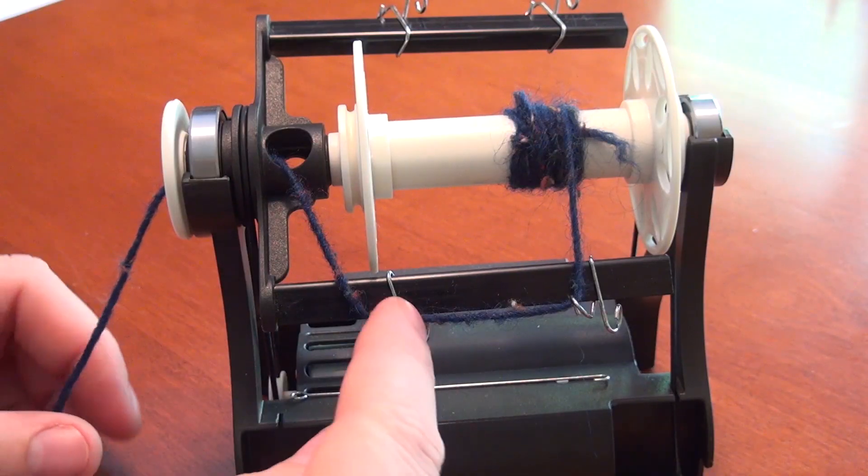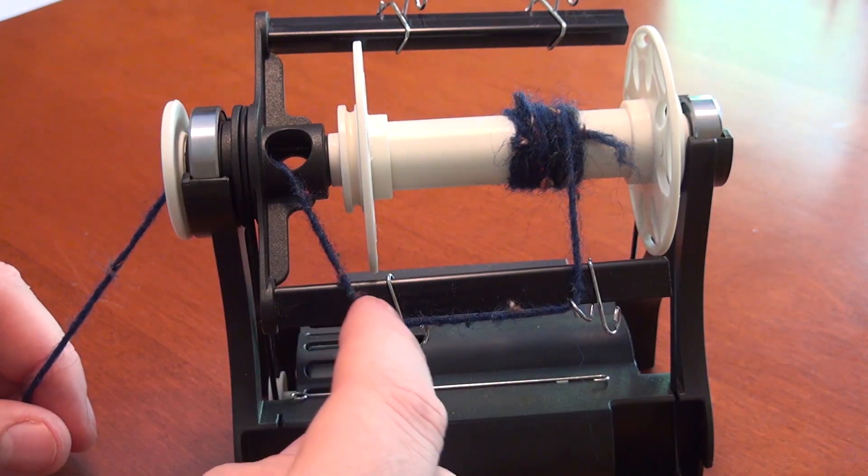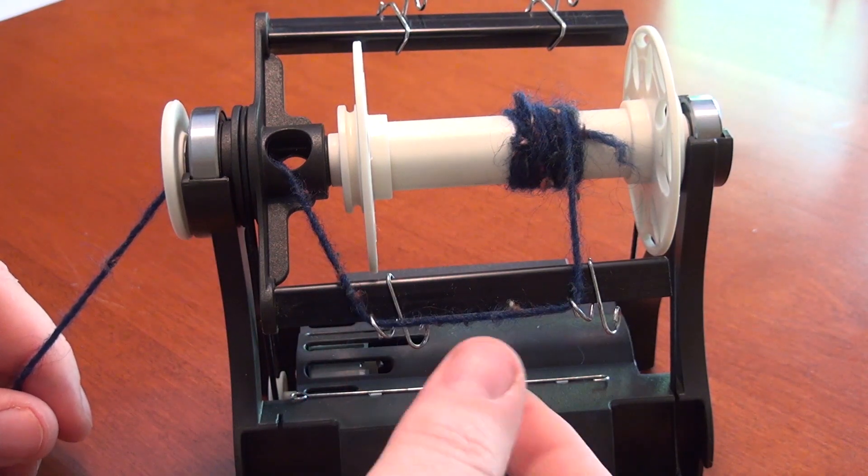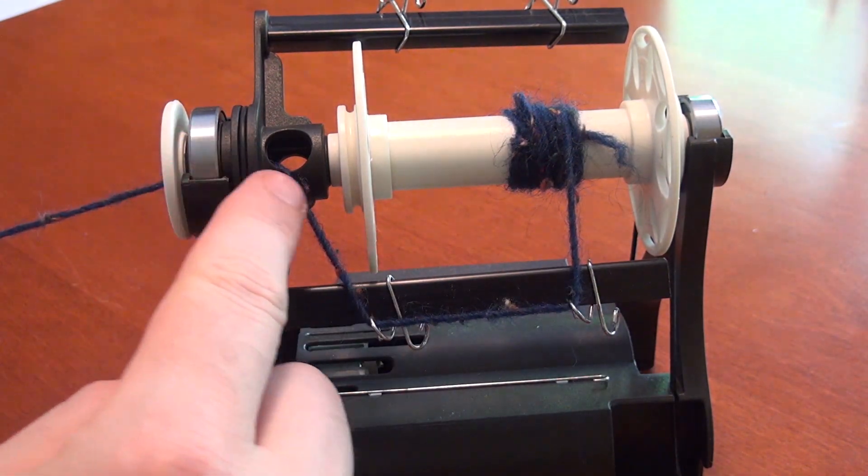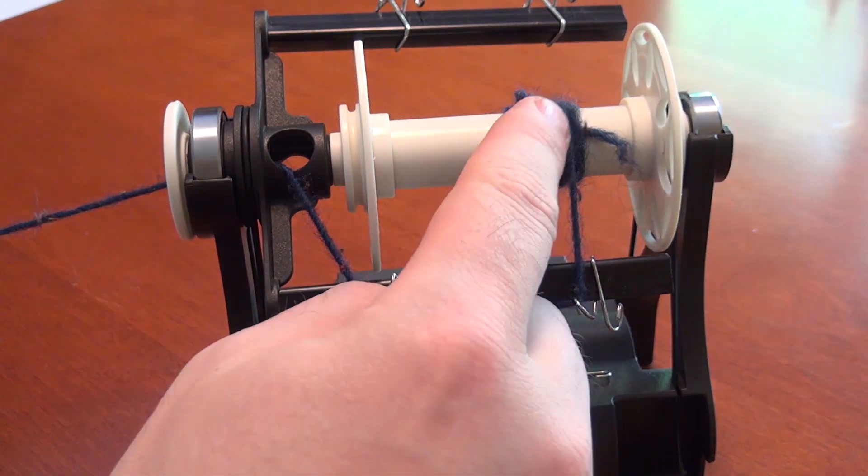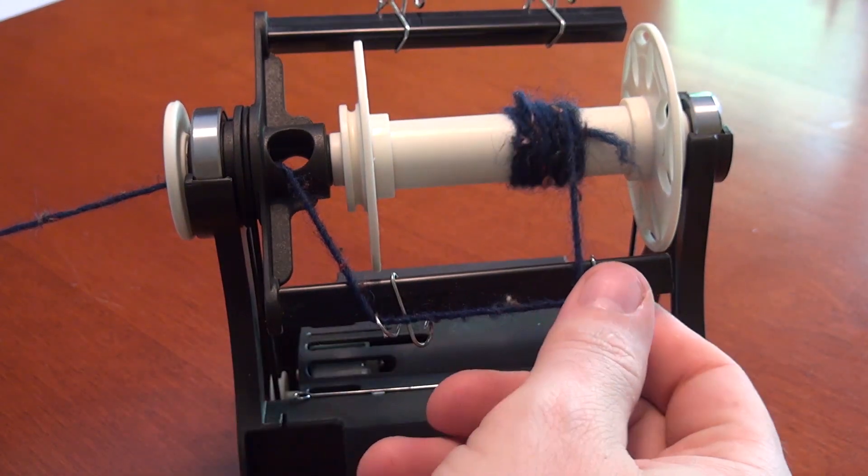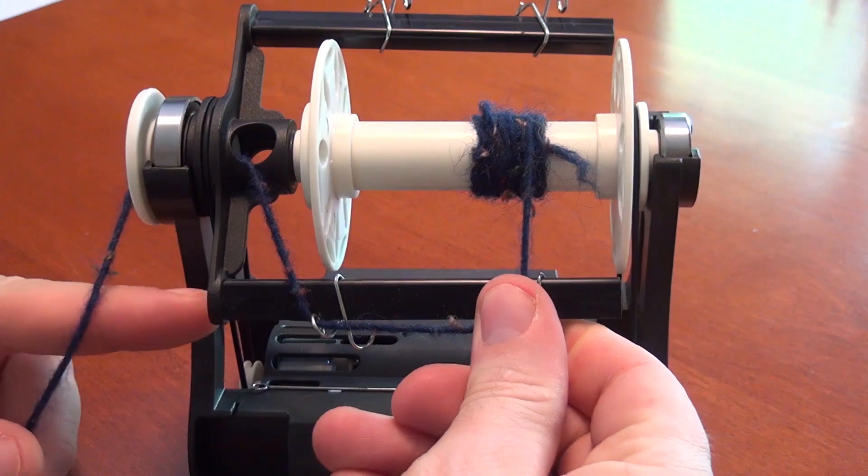These sliding yarn hooks guide the yarn before it goes on to the bobbin. Most of the time you will only use two of these at a time and the setup will look like this. When the bobbin starts to get a bump of yarn on it, stop the flyer and then slide the hook like this.